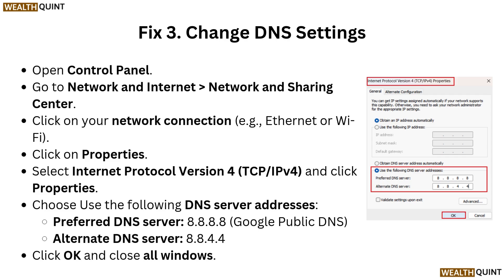Fix three: Change DNS settings. Open Control Panel, go to Network and Internet, then Network and Sharing Center. Click on your network connection (e.g., Ethernet or Wi-Fi), click Properties, select Internet Protocol Version 4 (TCP/IPv4) and click Properties. Choose 'Use the following DNS server addresses': Preferred DNS server 8.8.8.8 (Google Public DNS), Alternate DNS server 8.8.4.4. Click OK and close all windows.